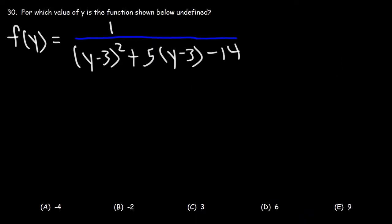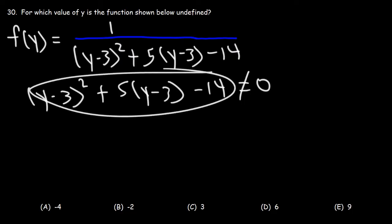Number 30. For which value of y is the function shown below undefined? So the function will be undefined once again when the denominator is equal to 0. So y minus 3 squared plus 5y minus 3 minus 14. We're going to set this to 0. So the function won't exist or will be undefined when this portion is equal to 0. So we're going to put the symbol not equal to 0.